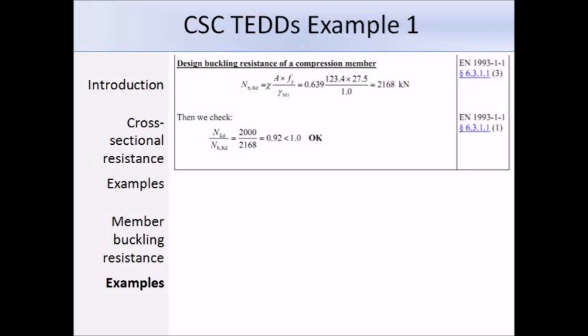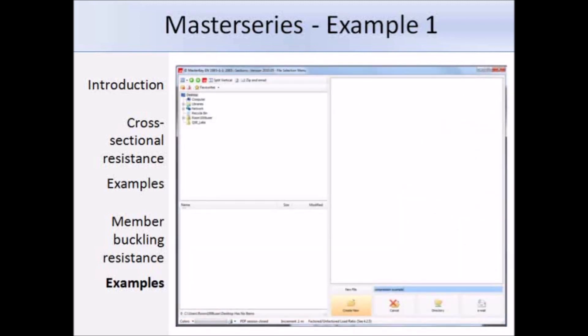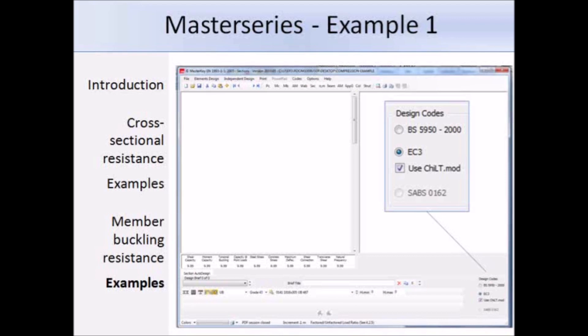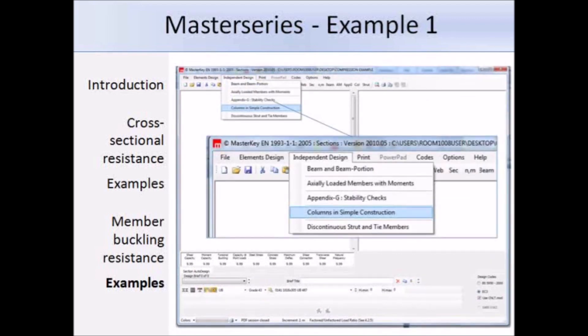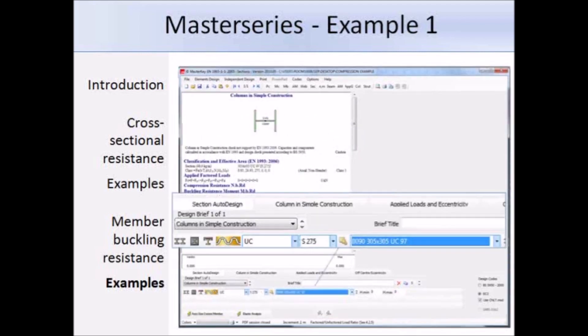That was example 1, and now I'm going to run through the same example using MasterSeries software. For this problem we're going to be using the MasterKey section design option. This is just a compression example. Here's the screen that we're presented with, and I've made sure to select Eurocode 3 design code option. We're dealing with a column, so we need to select the column and simple construction option from the member design menu. Here's the default screen that was displayed. We need to input our section, so using the drop-down boxes I've selected 305 by 305 by 97 UC with steel grade S275, the same as in our example. Here I've put in the value of 2000 kN for the design compression force and a length of 8 meters for the column.